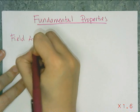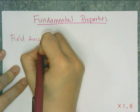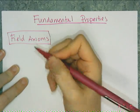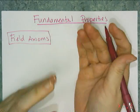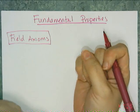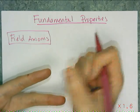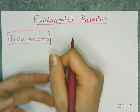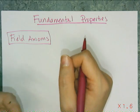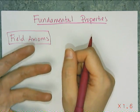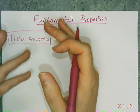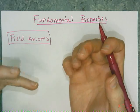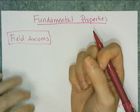A field is a mathematical construct that is a set of objects and two operations defined on that set. In order for something to be a field, these six fundamental properties have to be true.